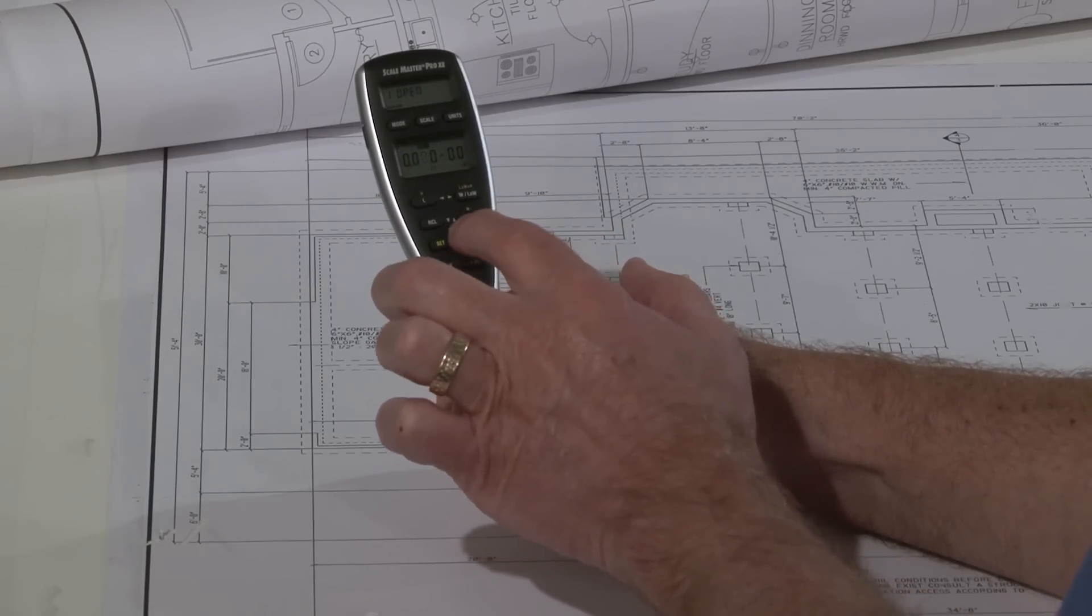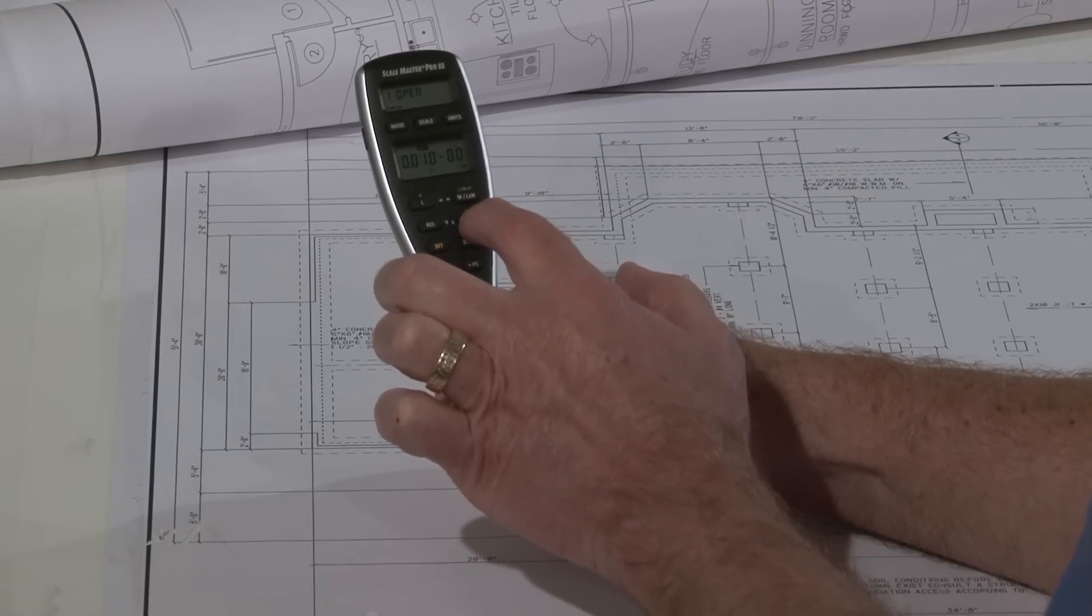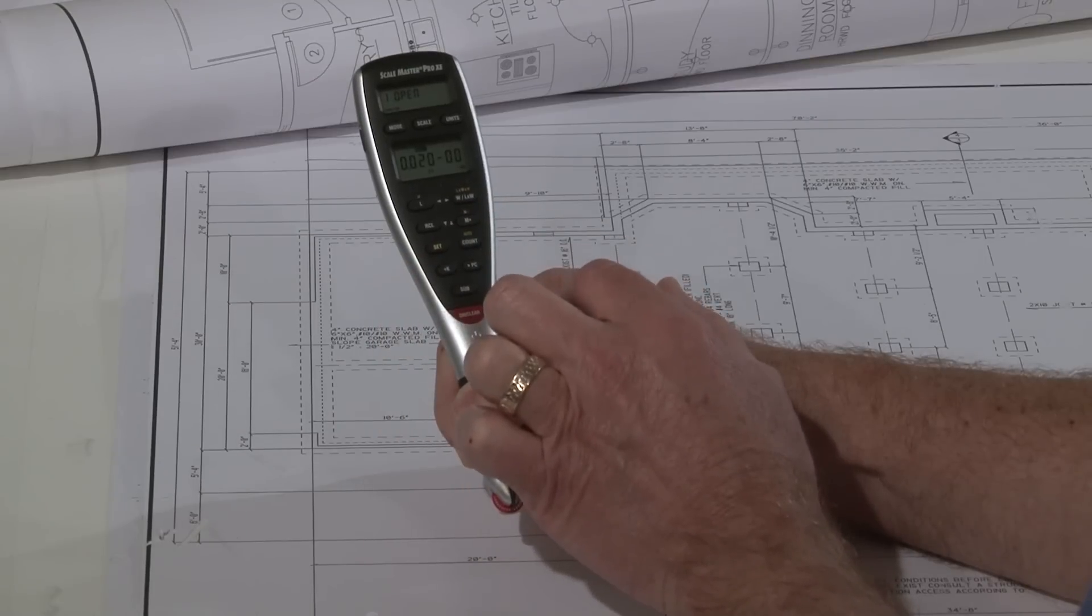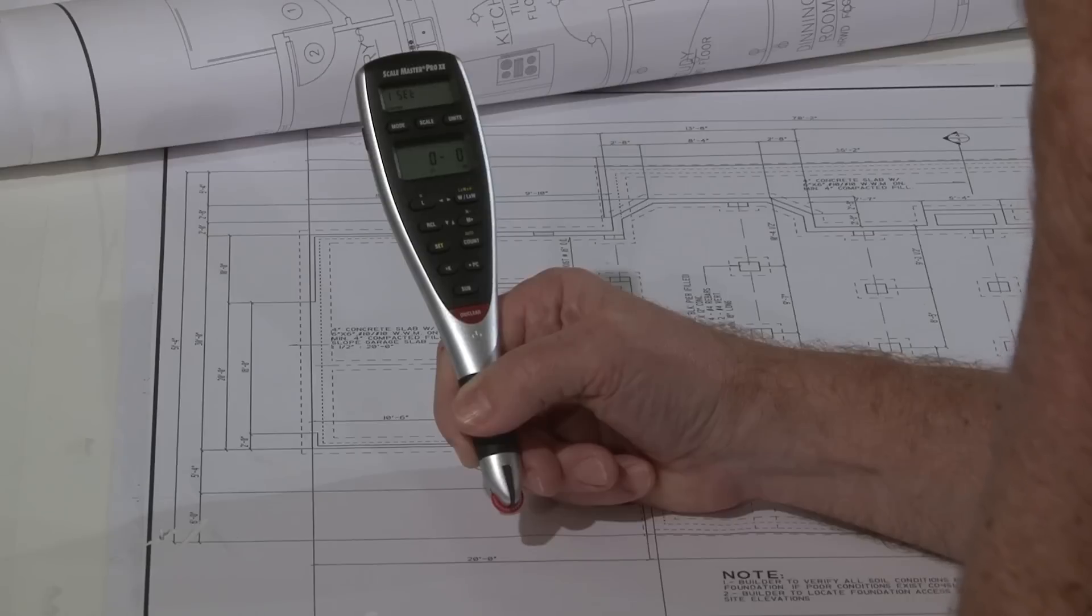We're talking about 20 feet here. The up and down arrows allow you to increase or decrease the values. Let me press that once, twice. Twenty feet is all I need. I don't have any inches, so I'm just going to hit set. That concludes it—it says it's now set.